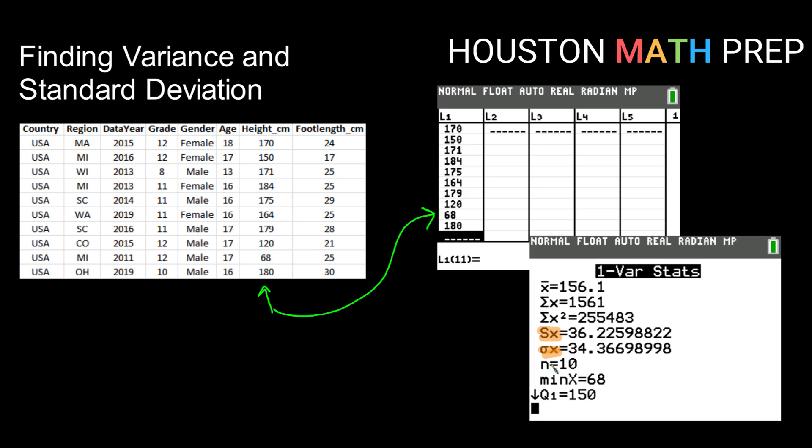The calculator doesn't know if the data you've fed to it is from a population or from a sample. But you as the user need to know that. In this case, this census data is a sample set of data. So we are going to be looking at the standard deviation labeled s of x for sample.